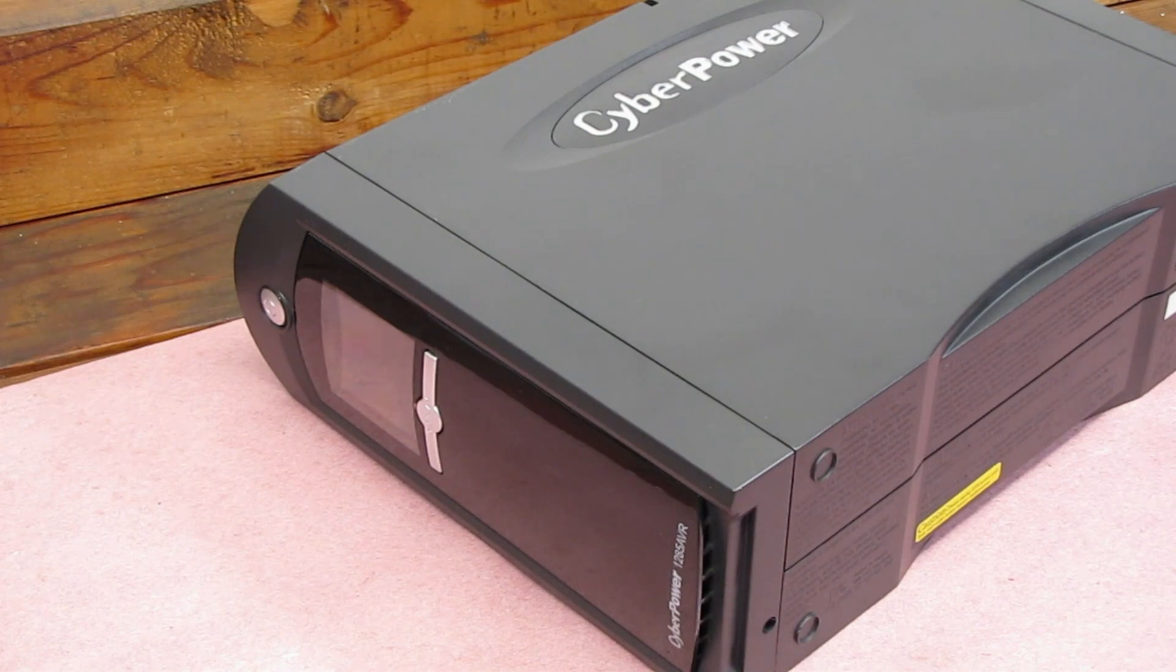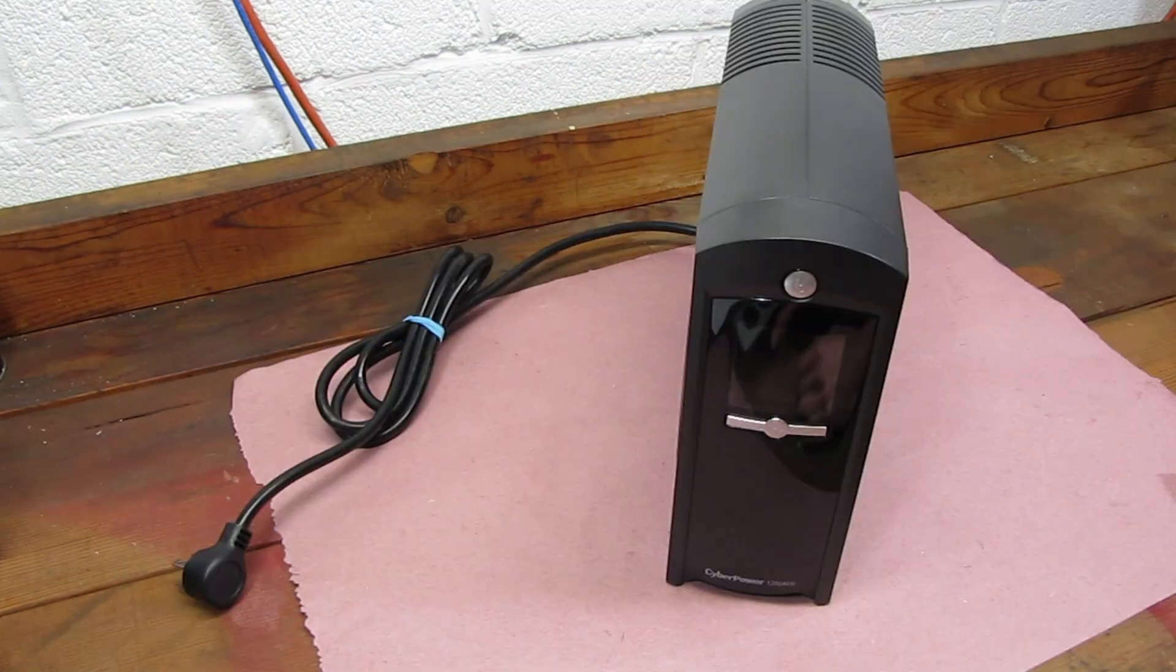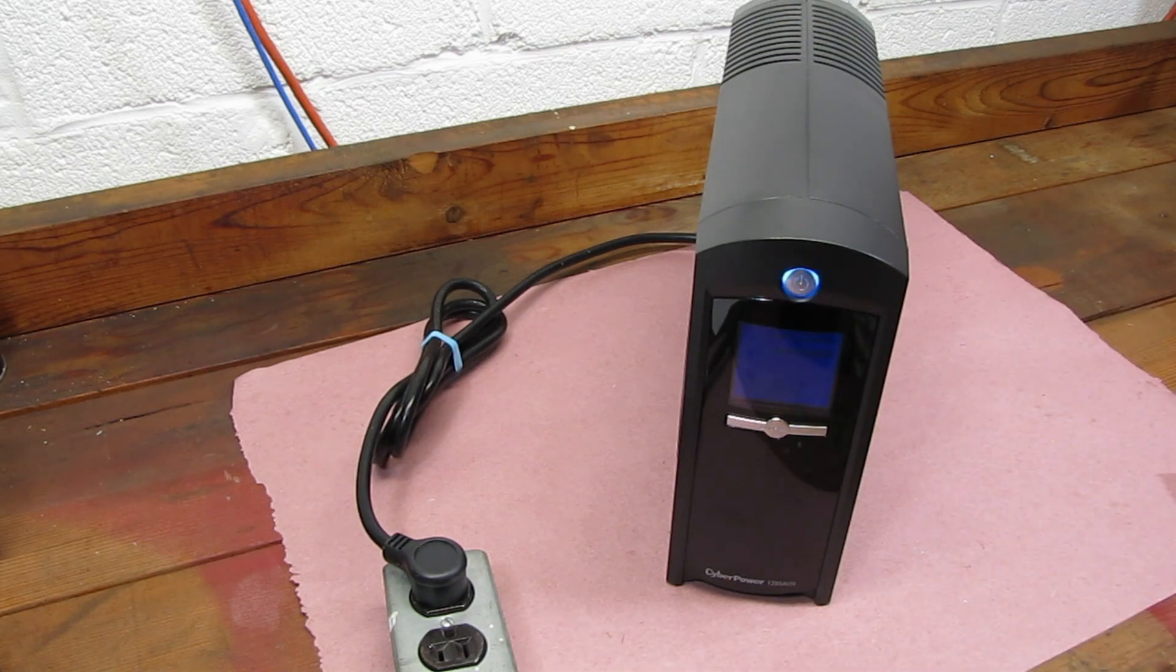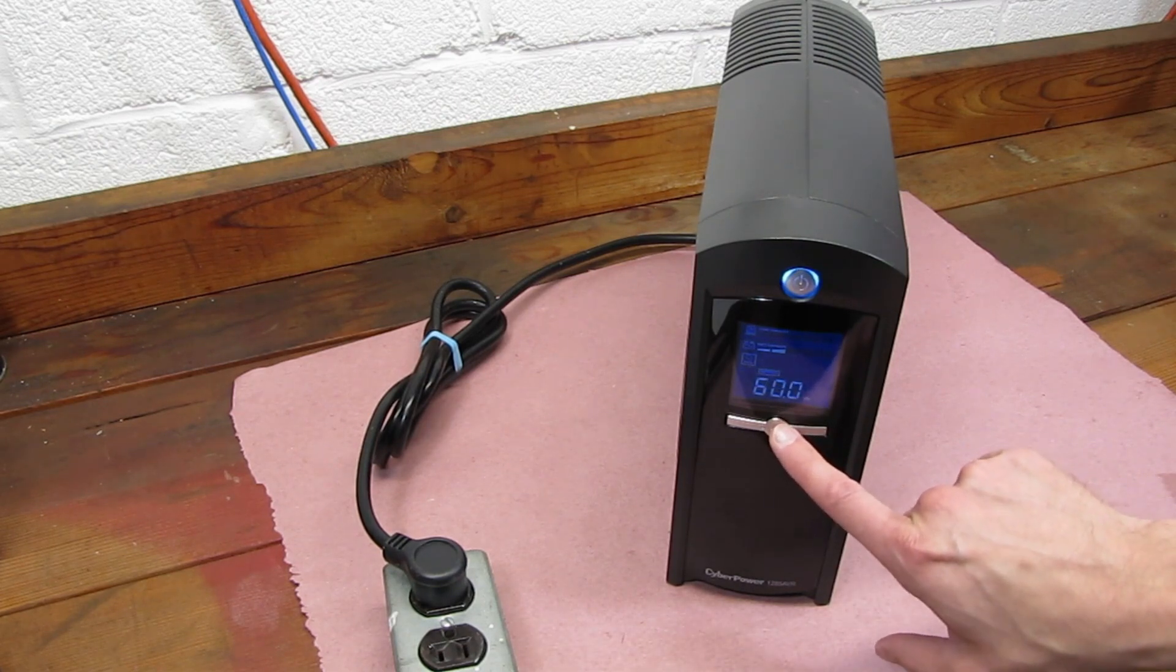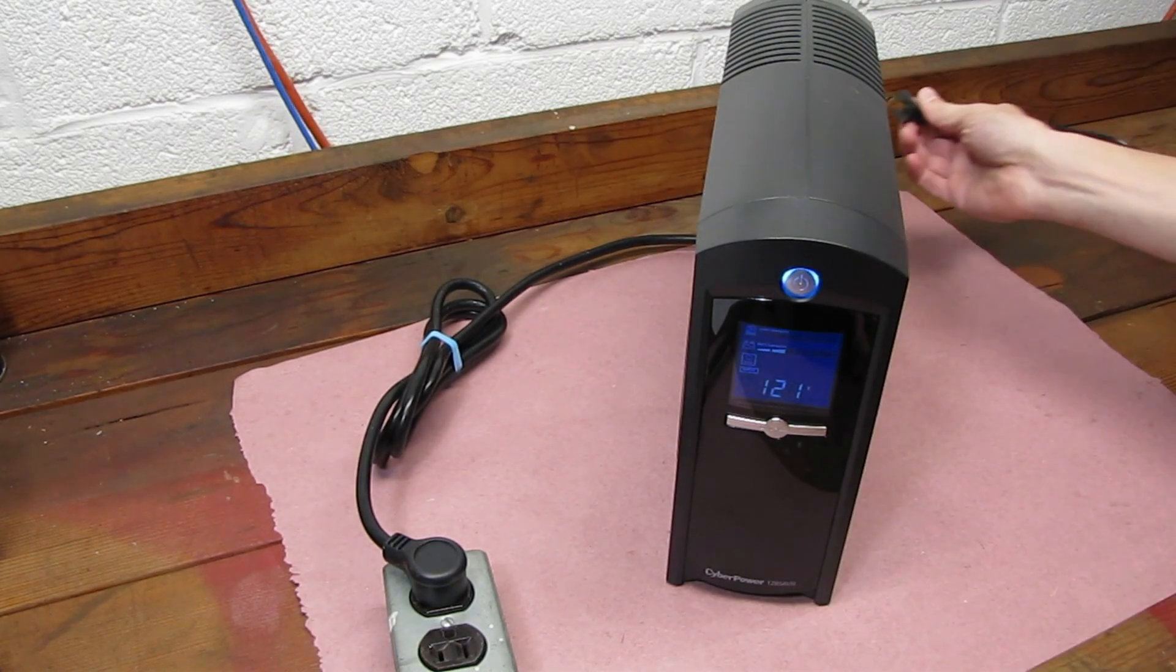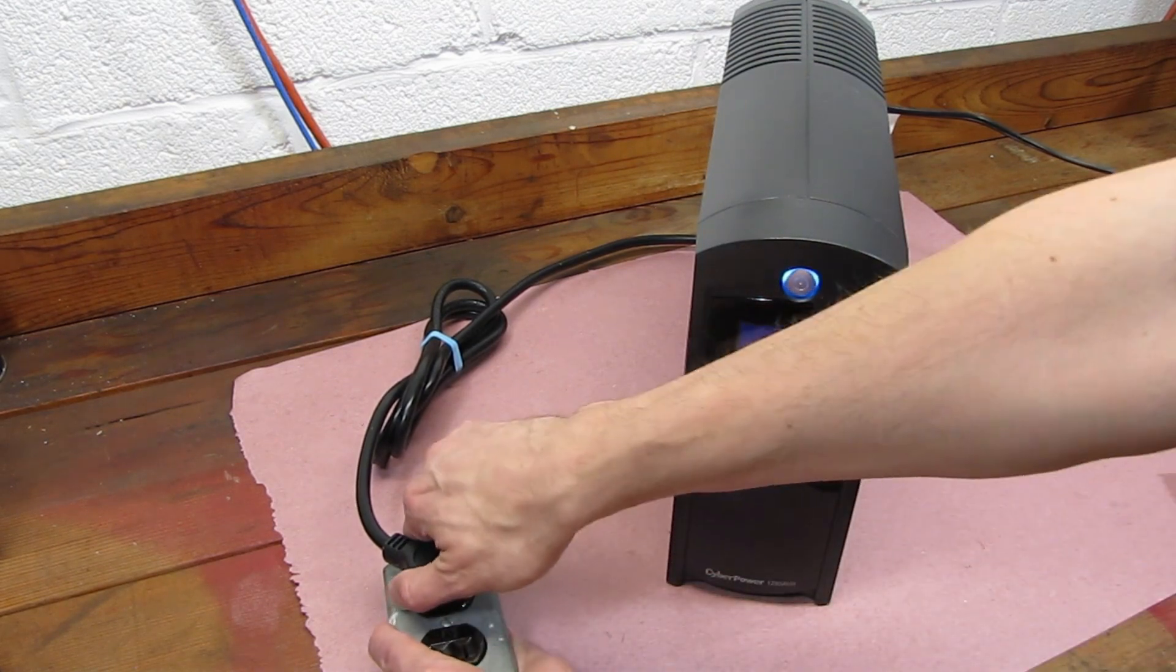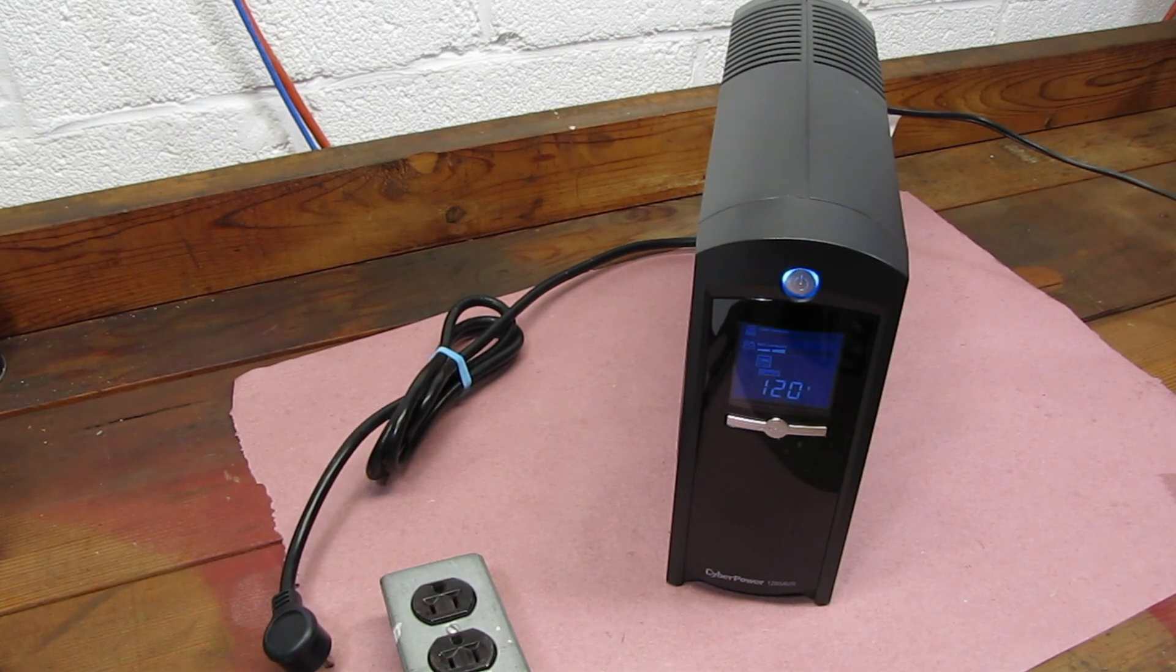Then turn it upside down and put the screw back in. Now we'll give it a test. Scrolling through the menus on this UPS shows that it has about 37% charge available, which isn't too bad considering I haven't charged it yet. I'll plug in one of my lights and we'll test it. Simulating a power fall. It works!